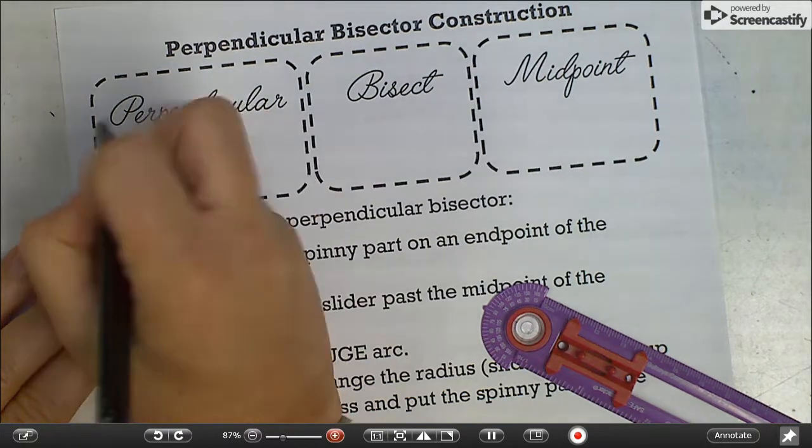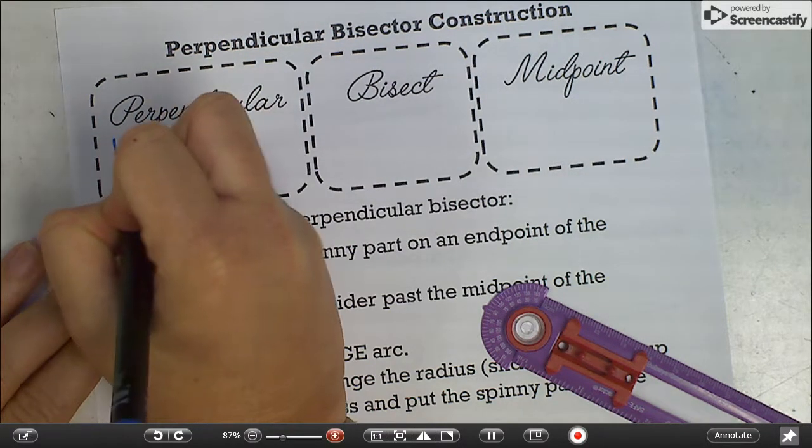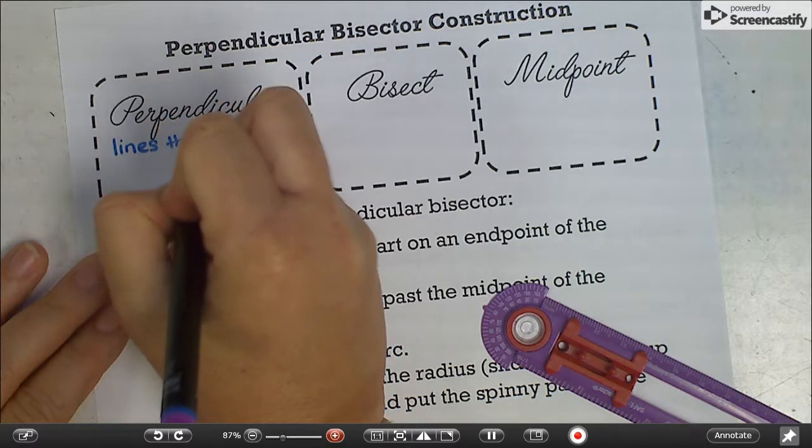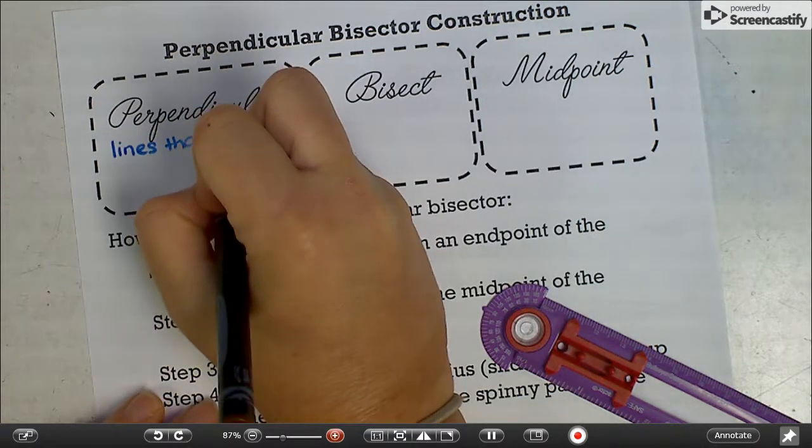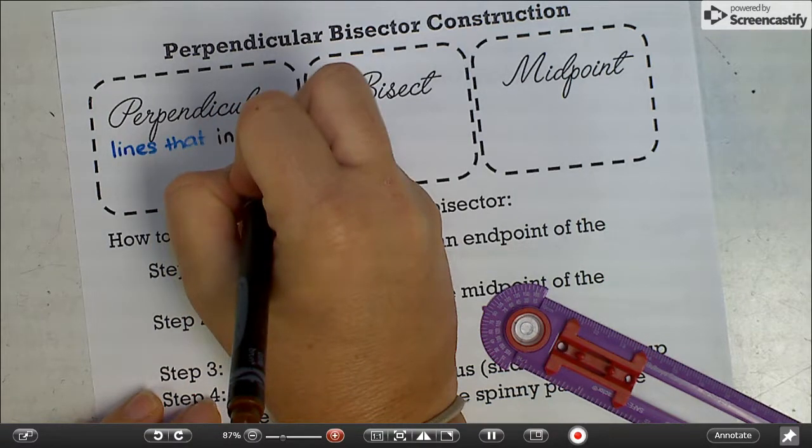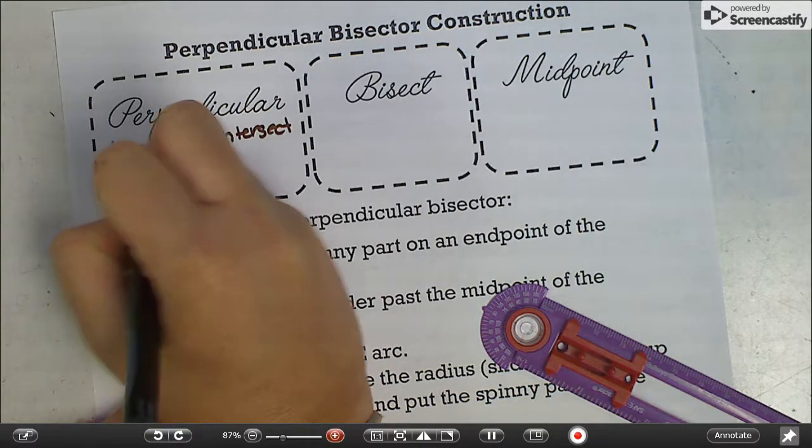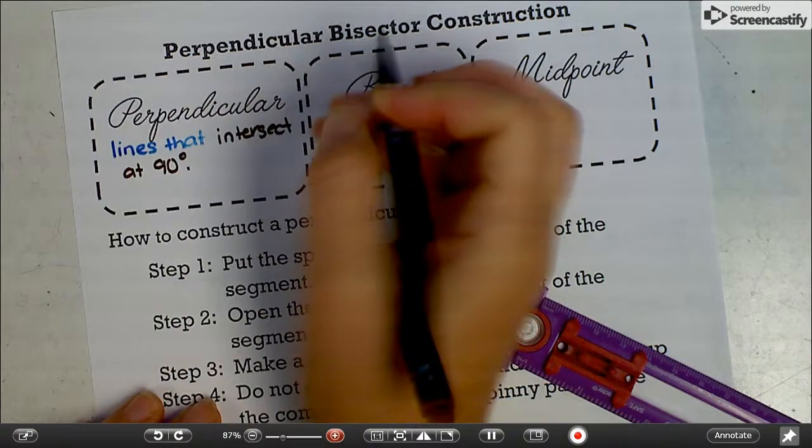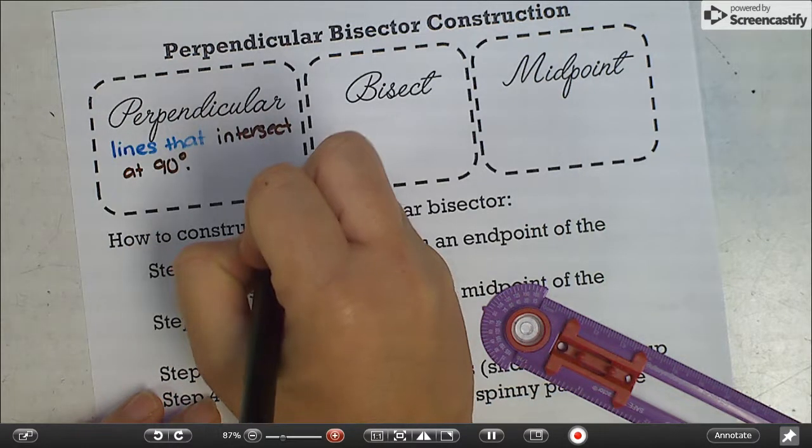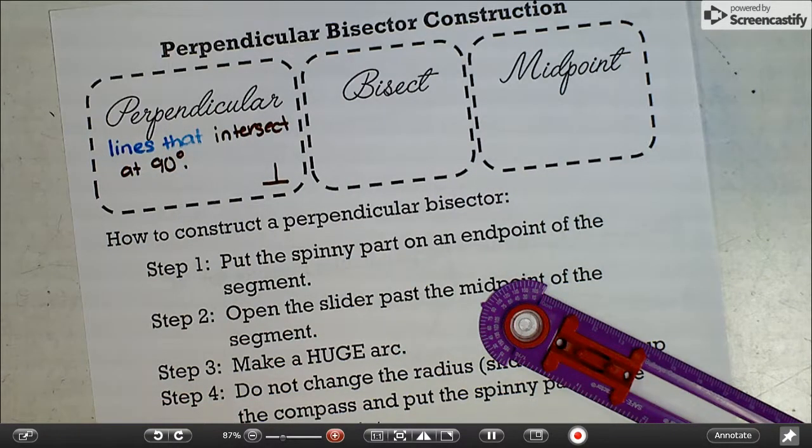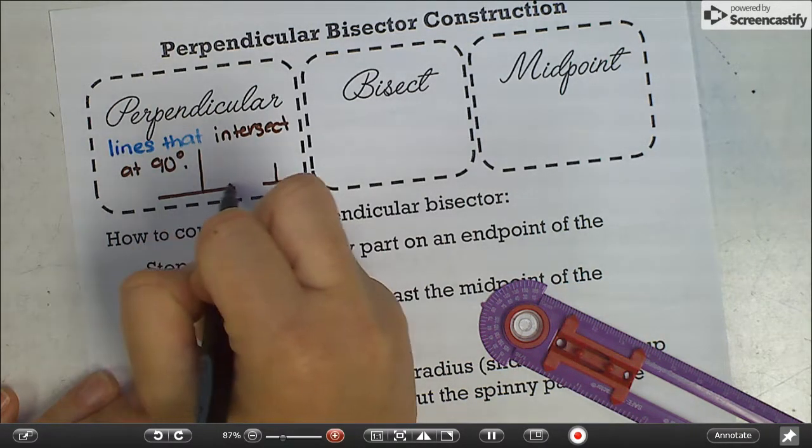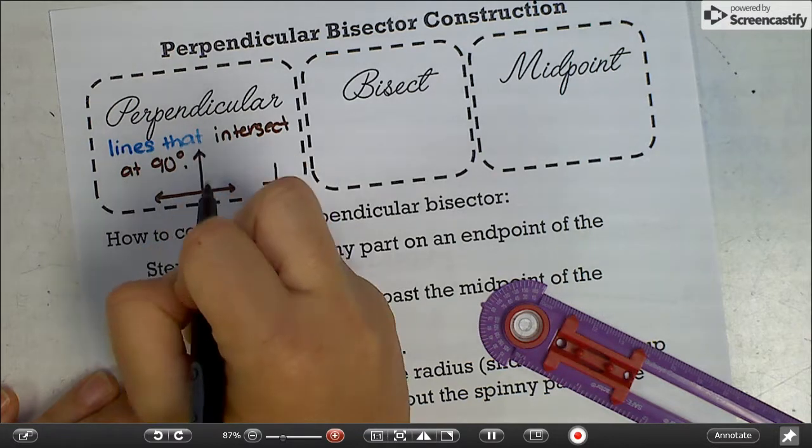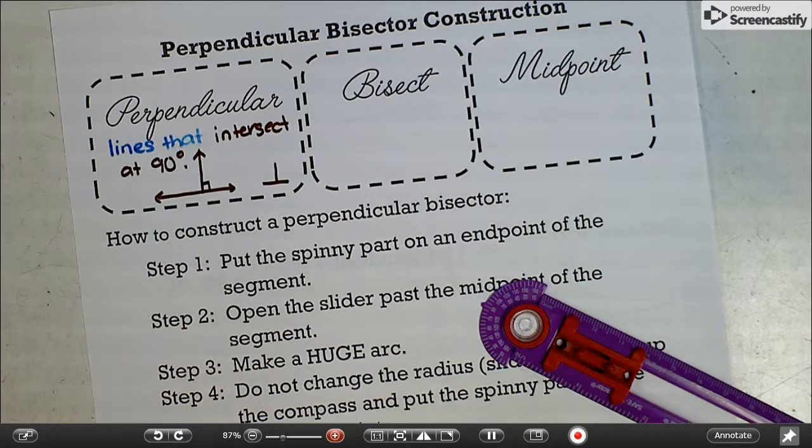Perpendicular are lines that intersect at 90 degrees. The symbol looks like this, a little upside down T, and that stands for perpendicular. A lot of the time, you'll see some lines that intersect like this, and they'll put a little box in the corner. That means that they are perpendicular.